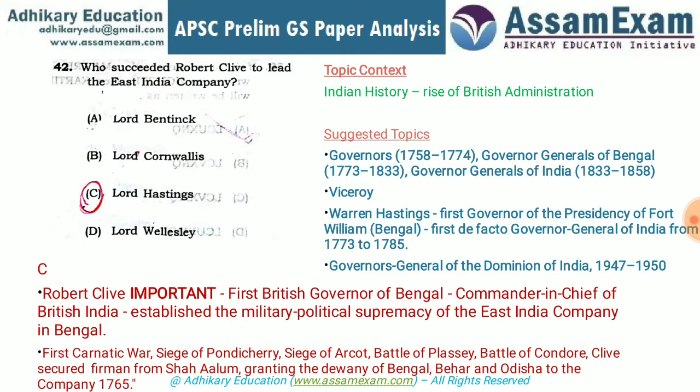Question 42 asks who succeeded Robert Clive to lead the East India Company. Robert Clive was the first administrator and pioneer in establishing British rule in India, coming from an army background. He fought and won many wars against Indian local rulers and the French. The correct answer is Lord Warren Hastings — first Robert Clive, then Warren Hastings.